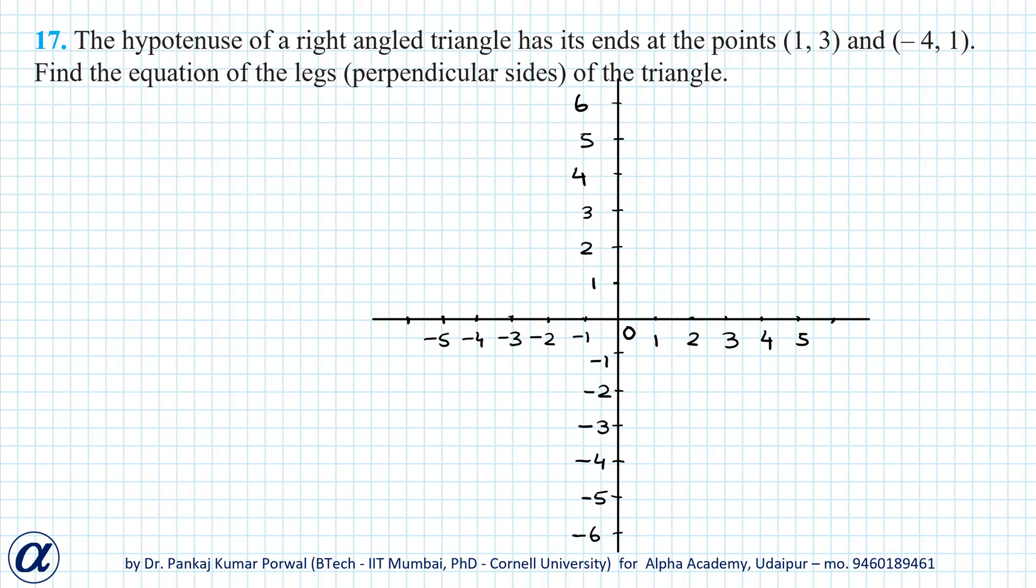In this question we are given that the hypotenuse of a right angled triangle has its ends at the points (1,3) and (-4,1), and we want to find the equation of the legs, that is the perpendicular sides of the triangle.